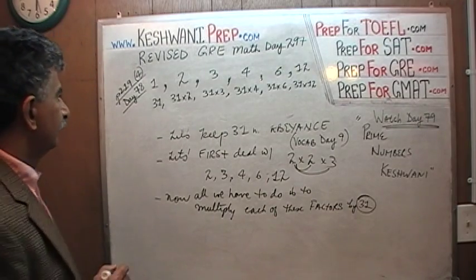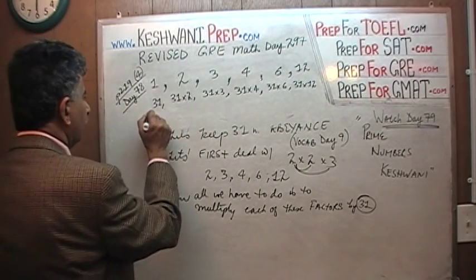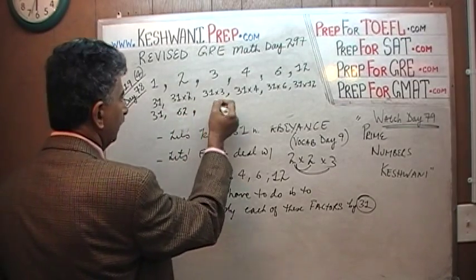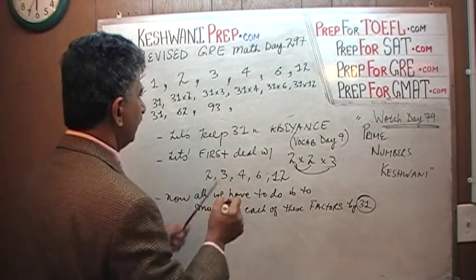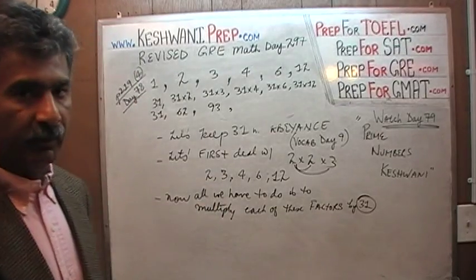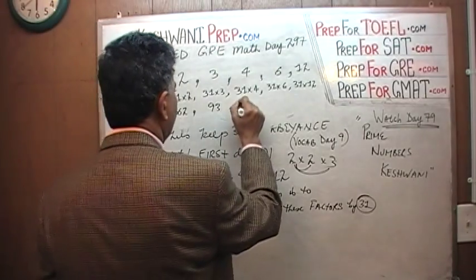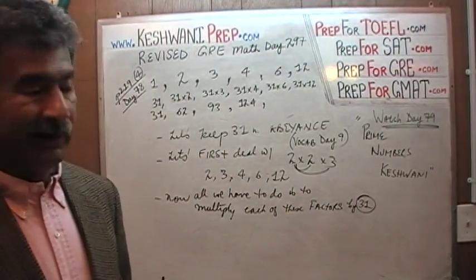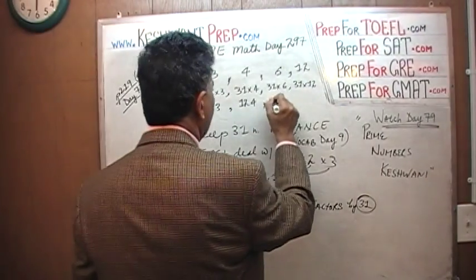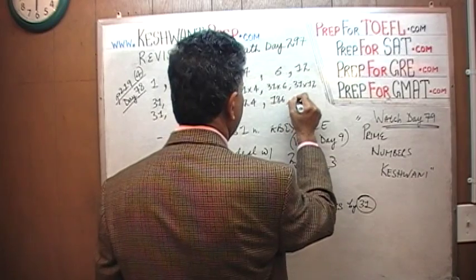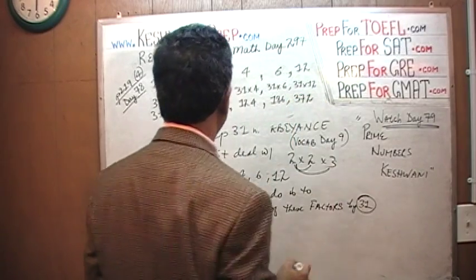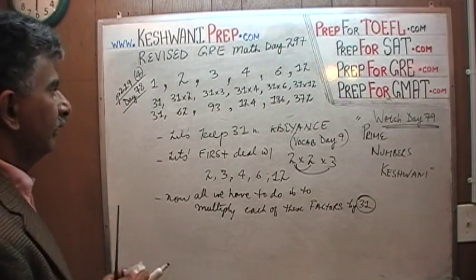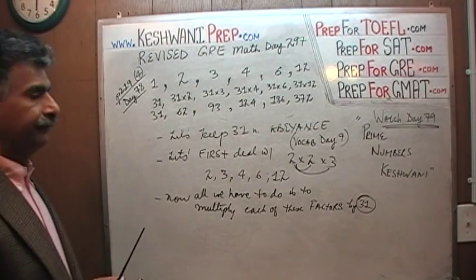So, calculating the actual values: 31 is just 31; 31 times 2 is 62; 31 times 3 is 93; 31 times 4 — 30 times 4 is 120, plus 4 is 124; 31 times 6 — 30 times 6 is 180, so 186; and finally 372. There you go — that's your complete list of all the factors of 372.